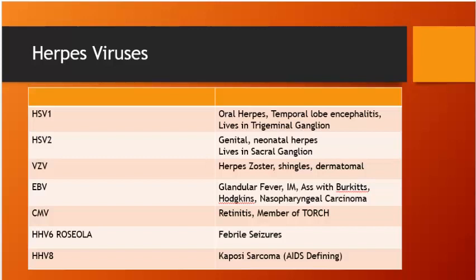Infectious mononucleosis (EBV): adolescent kissing disease, flu-like symptoms. Diagnose clinically; if tests are done, look for atypical lymphocytes (non-specific) or Monospot/heterophile antibody test (specific). Treat conservatively — it's viral and self-limiting. Warn the patient not to participate in contact sports due to massive splenomegaly and risk of splenic rupture. Reassess in two weeks.